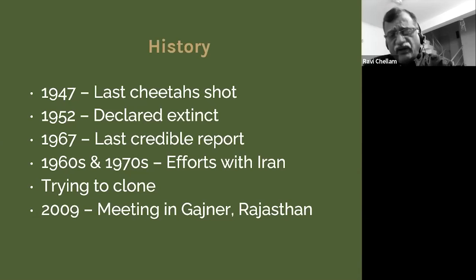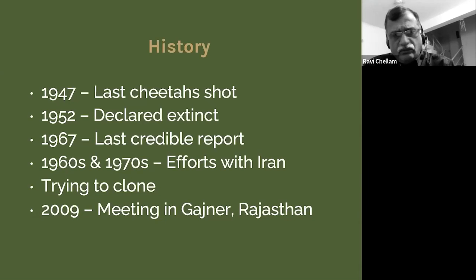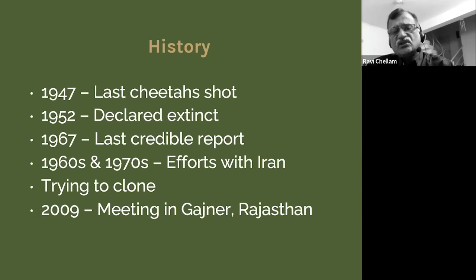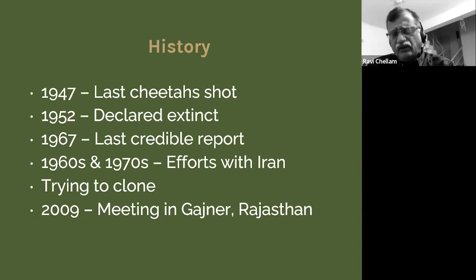To give a brief history over the last 80-odd years: in 1947, the year India got independence, was the last confirmed shooting of live cheetahs — three males in central India. The government officially declared the species extinct in 1952, but there were lingering reports, and the last credible report is from 1967.